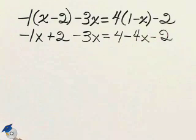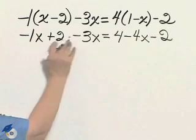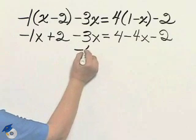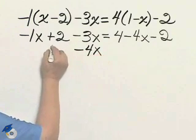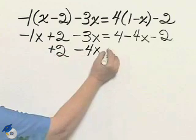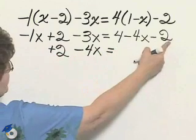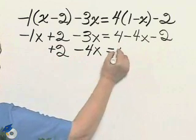Combine like terms. See the coefficients. Combine like terms. 4 take away 2 is 2.